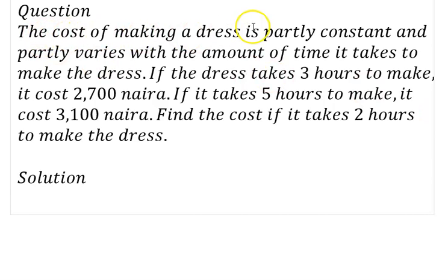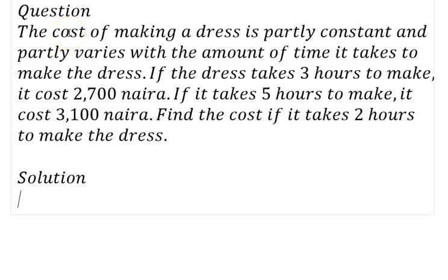The problem states: the cost of making a dress is partly constant and partly varies with the amount of time it takes to make the dress. When you see the words 'partly constant' and 'partly varies', that signals partial variation — it involves two constants. We'll use C for cost.